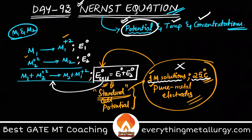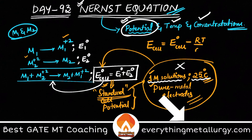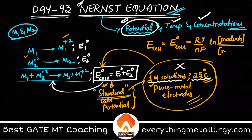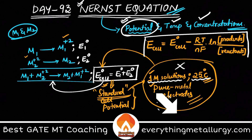Now coming to the famous Nernst equation, which we write as E — no longer E° but E, because it is not standard. So E_cell equals E°_cell minus RT/nF times ln of (concentration of products divided by concentration of reactants). This accounts for both temperature and concentration of products and reactants.